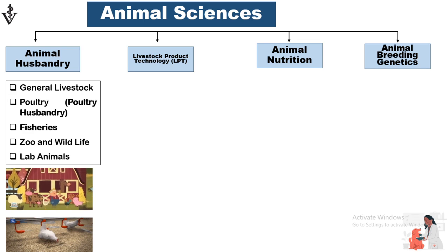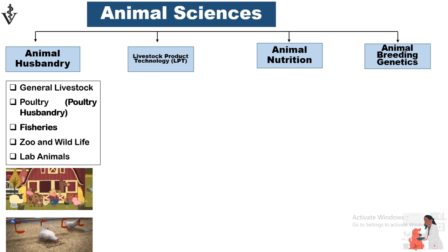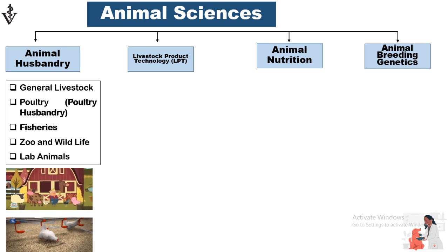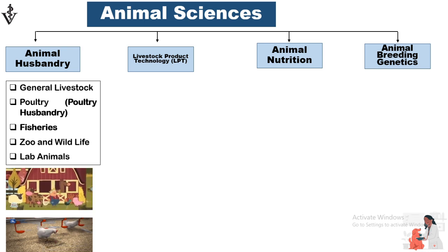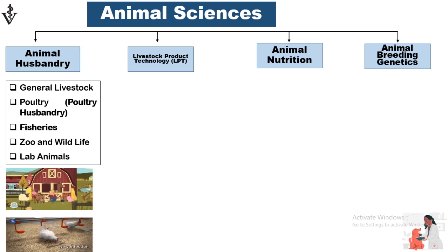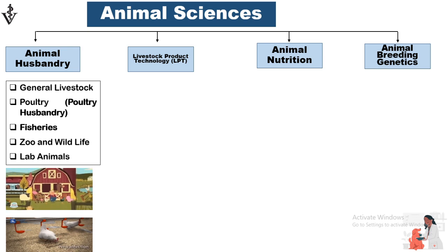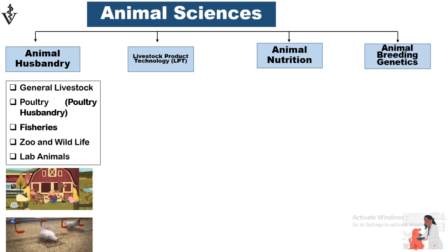Most students think that animal husbandry is only concerned with livestock, but that's not true. Animal husbandry is concerned with general livestock such as cattle, buffalo, sheep, goat, camel, horse, mule, donkey, poultry birds, fisheries, zoo and wildlife animals, and lab animals.